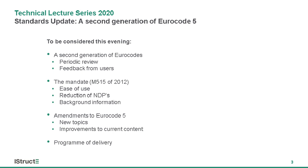Back in 2012, there was a mandate by the European Commission to update the suite of Eurocodes. One of the key things the standardization committees felt through various feedback processes was ease of use — meaning how the standard is written, the technical content, the presentation, and how easy it is to navigate through the pages and get the information you're looking for. These were real issues that many of us experienced when first opening the Eurocode.